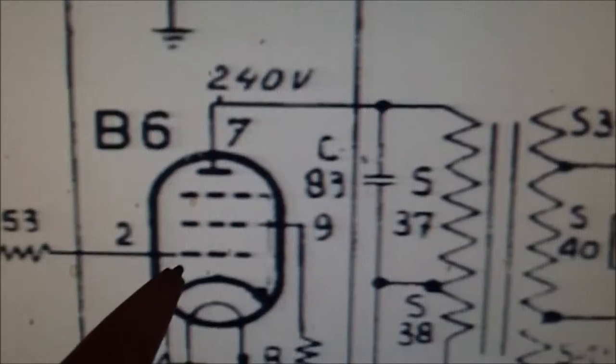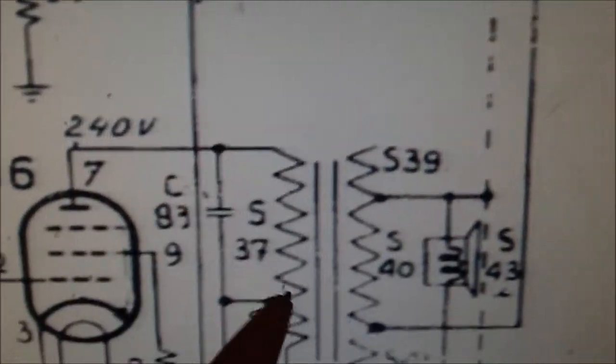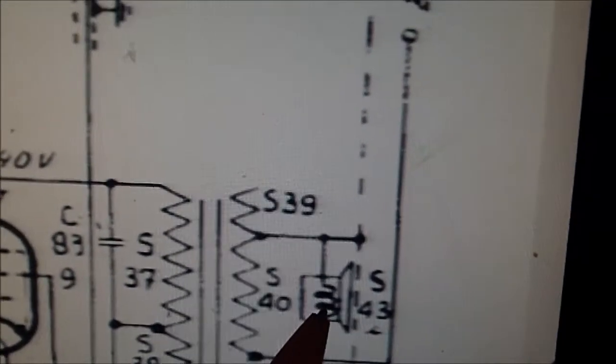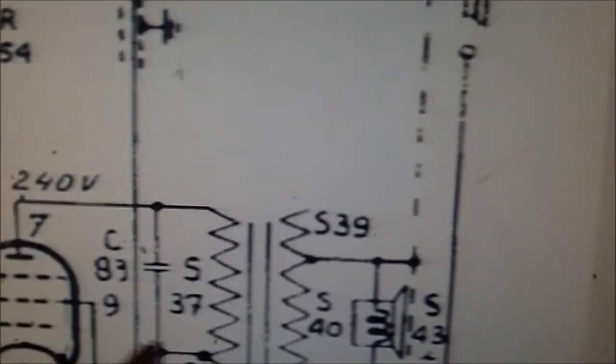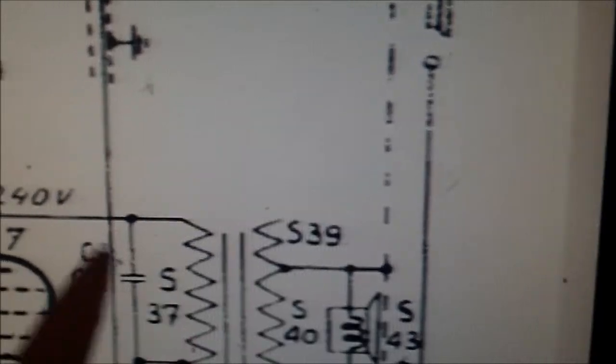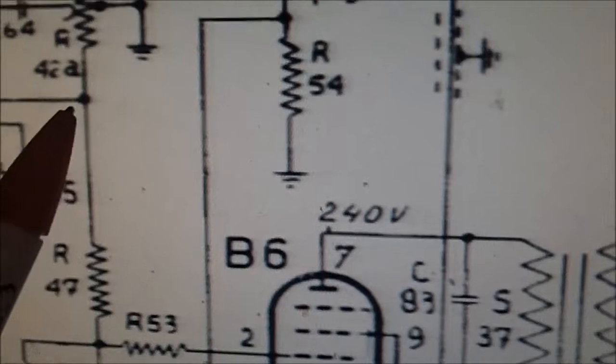This is your other 6BQ5. This is your plate. It goes to its output transformer to either the woofer or the mid-range, I really don't know. I would have to look at the parts list to see what that is. But what bothers me is there's no coupling capacitor.